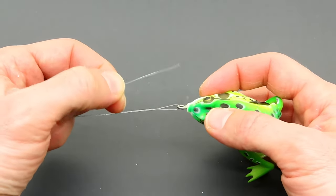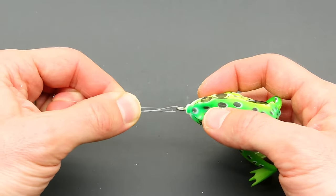And then you have this loop at the bottom near the eye of the lure. Place the tag end through that loop.